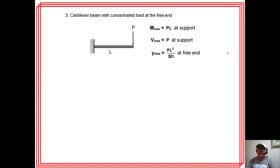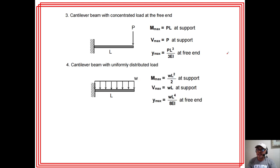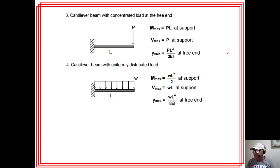We have the cantilever beam with concentrated load at the free end, and cantilever beam with uniformly distributed load. For determinate beams, maximum moment and maximum shear are easy to solve; deflection requires memorizing the formula. For indeterminate beams, we need to memorize the formulas since maximum moment and maximum shear are not easy to solve by simple methods.